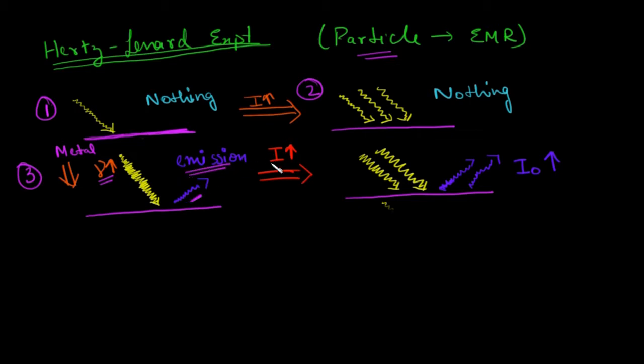Then what we do is, we decide to increase the intensity. Emission is happening, now instead of sending 100 photons, let's send 200 photons, and when we sent 200 photons instead of 100, instead of getting 100 emissions, we get double emissions, we get 200 emissions. These are the four observations that we got in this experiment.